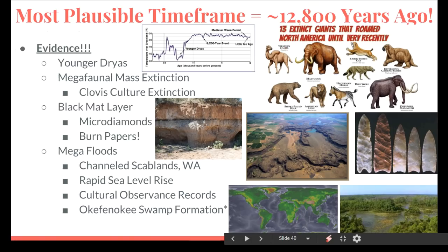So with all that said, the most plausible timeframe for an impact event that eventually created the Carolina Bays has to be around 12,800 years ago — right at the end of the last ice age. And this isn't just my opinion. There is a significant amount of evidence piled up to support this idea. I'm just going to take a minute to introduce these lines of evidence here, but the plan is to extend this presentation into a few more parts to talk about them in detail.